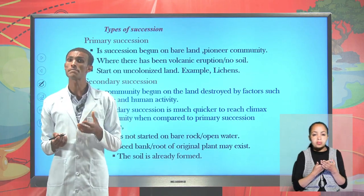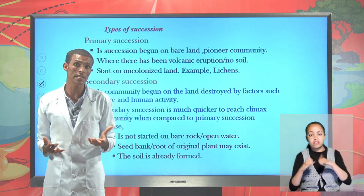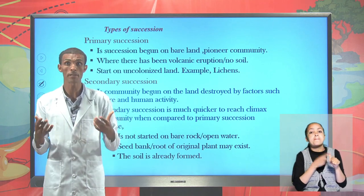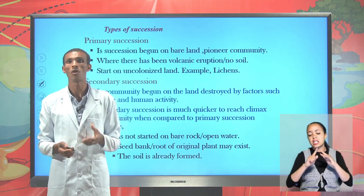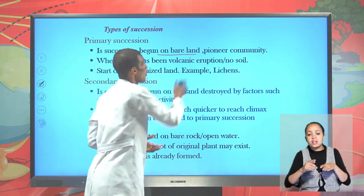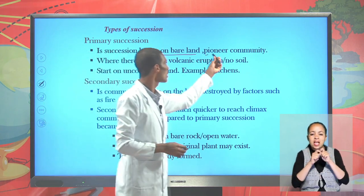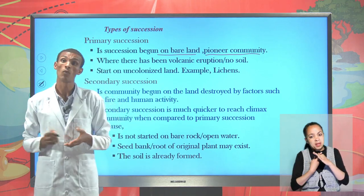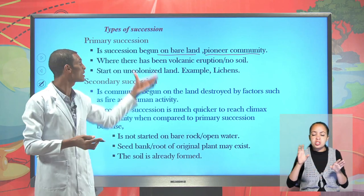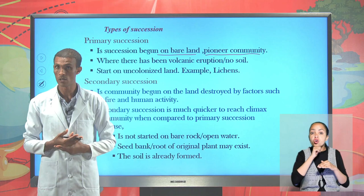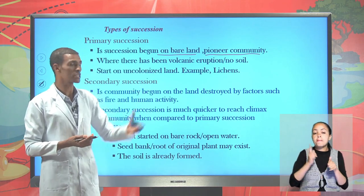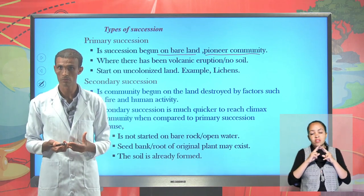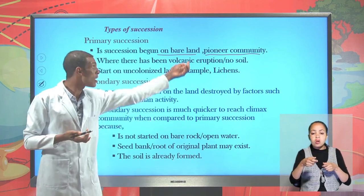Succession may be classified based on what type of state or conditions it begins in. The first type is primary succession — a succession that begins over bare land when there is no primitive soil. Such a pioneer community includes lichens. Primary succession can begin over volcanic eruption or an uncolonized area. Where primary succession begins, the index of diversity of the area is said to be very low.